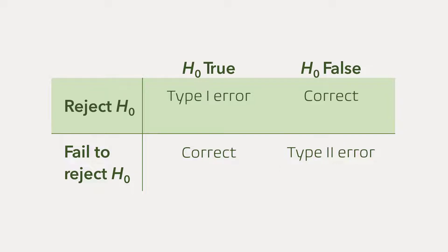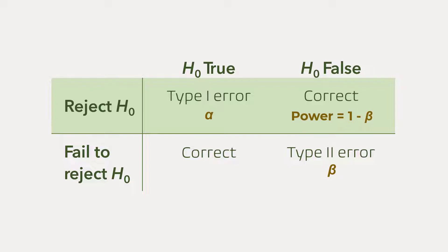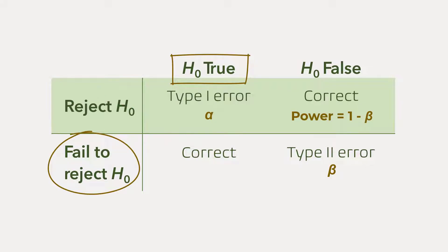The probability of a type 1 error is alpha, which is referred to as the significance level, while the probability of a type 2 error is called beta. The complement of beta is called power, which is the probability of rejecting a false null hypothesis. And not rejecting a true null hypothesis is referred to as confidence.